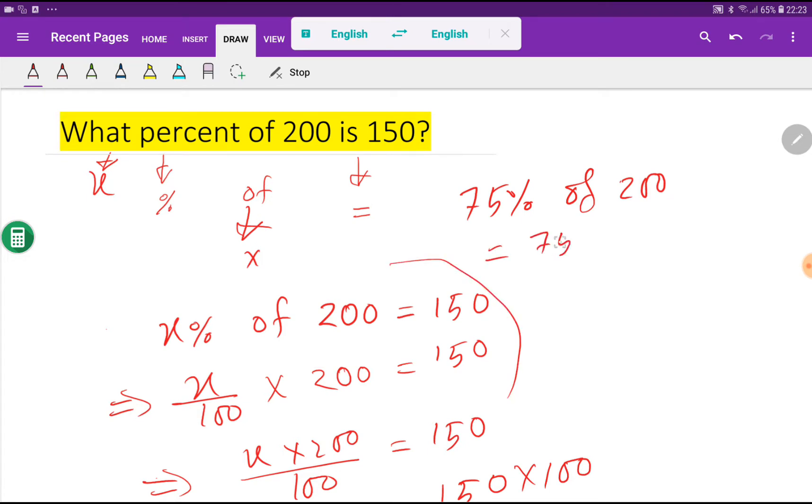So what I can do: 75 divided by 100. You know that percent means 1 by 100. So we are getting 75 over 100 times 200, that is 150. Look at here, 75 percent of 200 equal to 150. So proved.